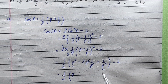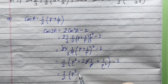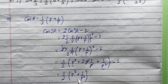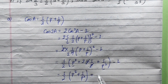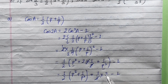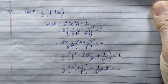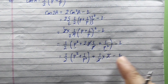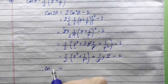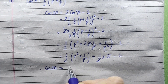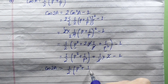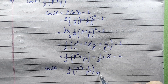We substitute and simplify: 1 by p square. Half the tool is half into 2 minus 1. 1 minus 1 is 0. So finally, cos 2a is 1 by 2 p square plus 1 upon p square. We have proved it.